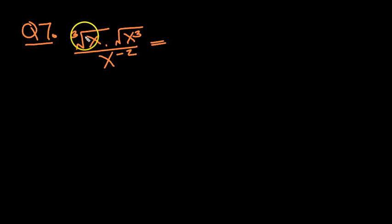Okay, for question 7, we've got the cube root of x times the square root of x cubed, all divided by x to the minus 2.